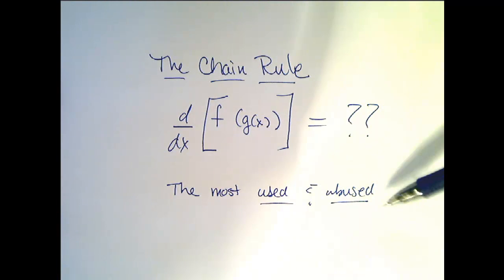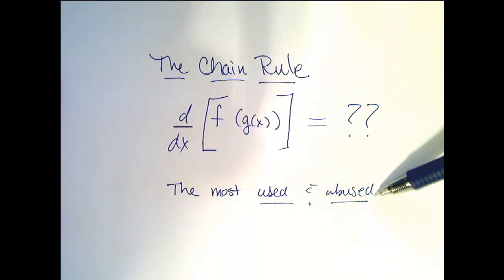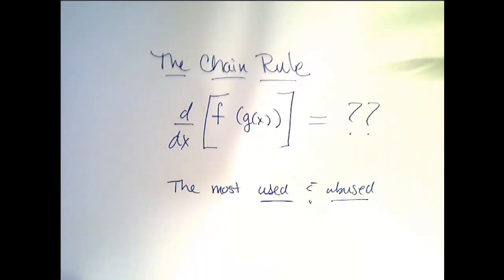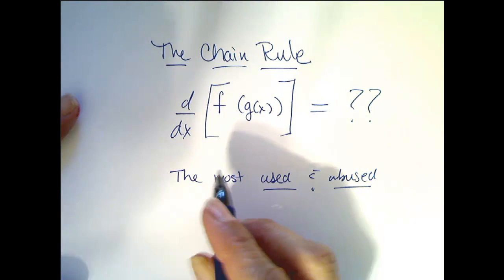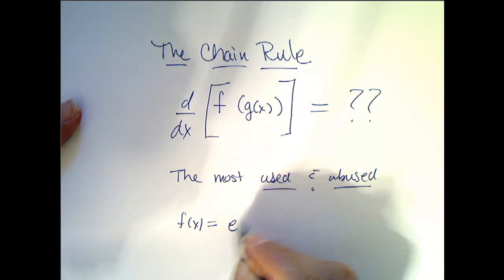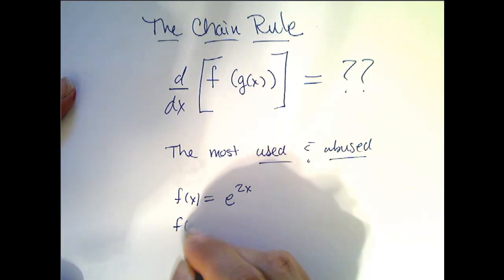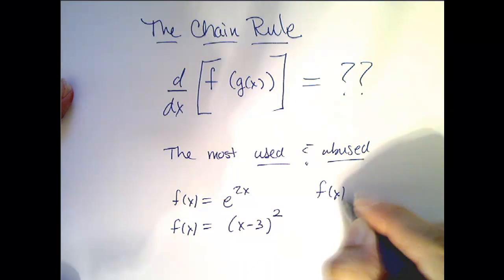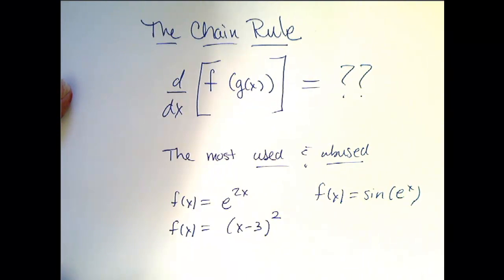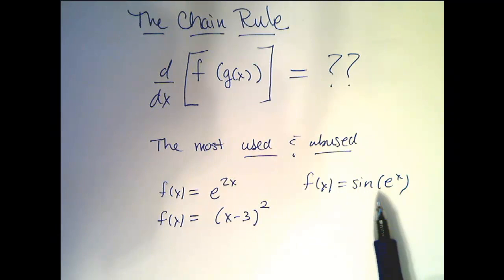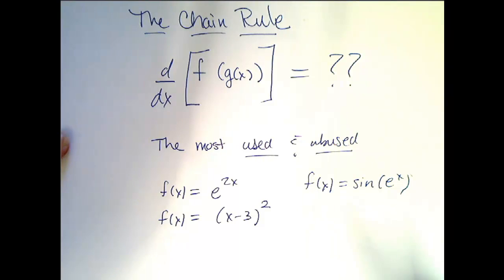We're ready to look at the most used and abused technique of differentiation: the chain rule. That is when we attempt to take the derivative of the composition of functions. For example, a composition of two functions may be f(x) = e^(2x), or f(x) = (x−3)², or f(x) = sin(e^x). These are examples of composition of functions where we know the derivative of parts or pieces, but we're not sure how to handle them when they're composed.